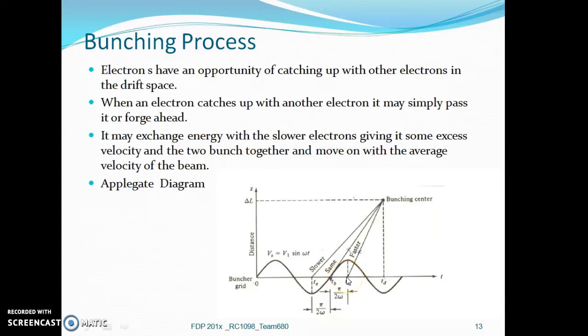Another electron passes through the gap voltage through the RF signal when the RF voltage is positive. Due to that, the velocity of the electron will increase. These electrons will meet at some point in the drift space resulting in the form of bunches.